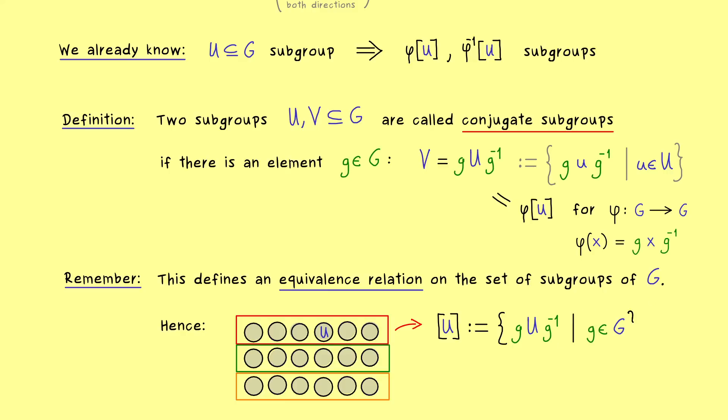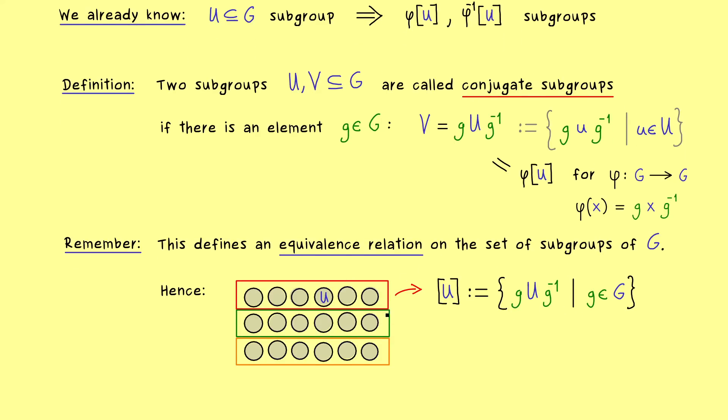And that's it you just take an arbitrary element g and you multiply it from the left hand side and the inverse from the right hand side. And with that we get all the subgroups in the equivalence class.